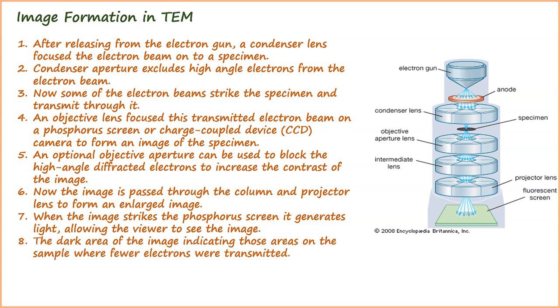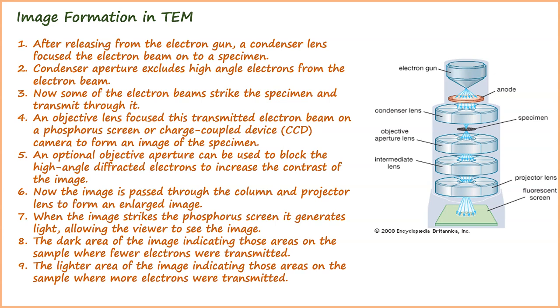The dark areas of the image indicate those areas on the sample where fewer electrons were transmitted. The lighter areas indicate those areas where more electrons were transmitted.